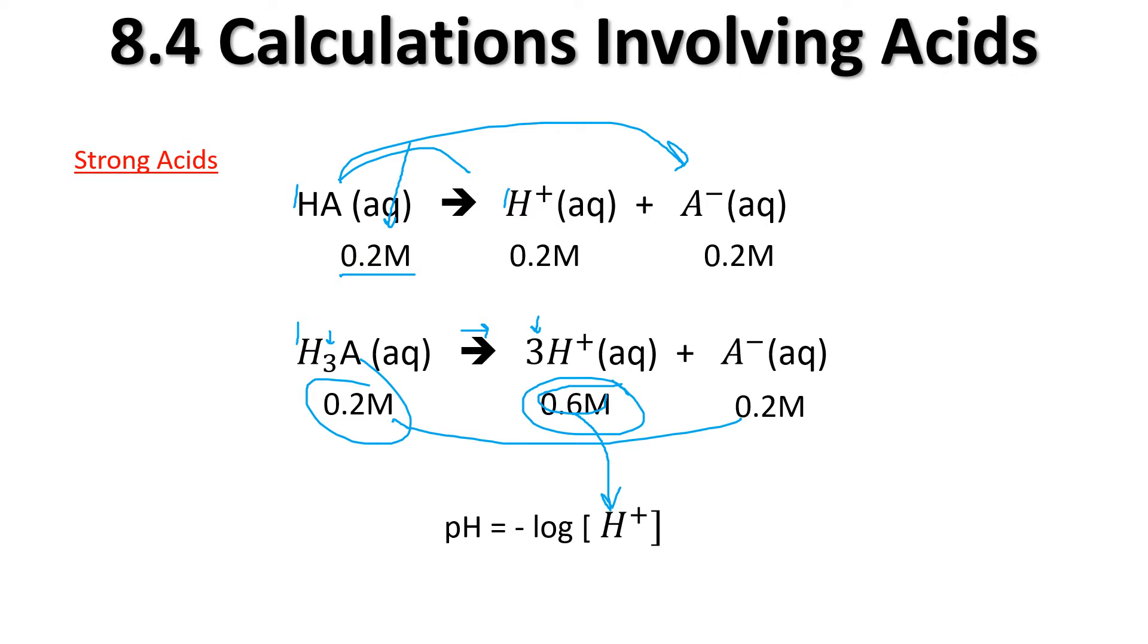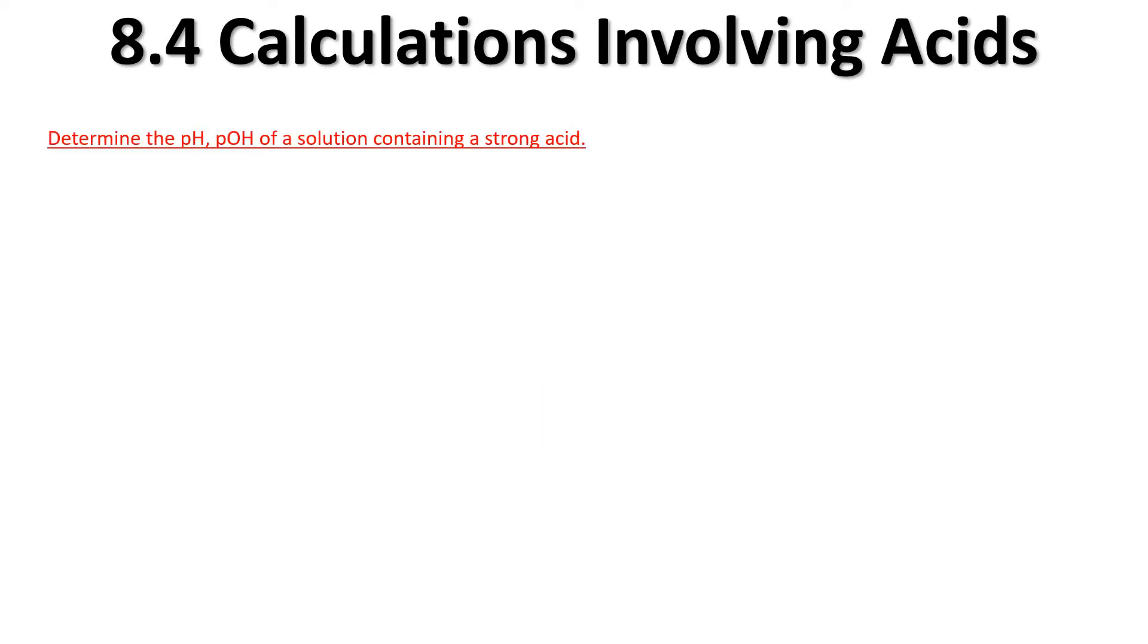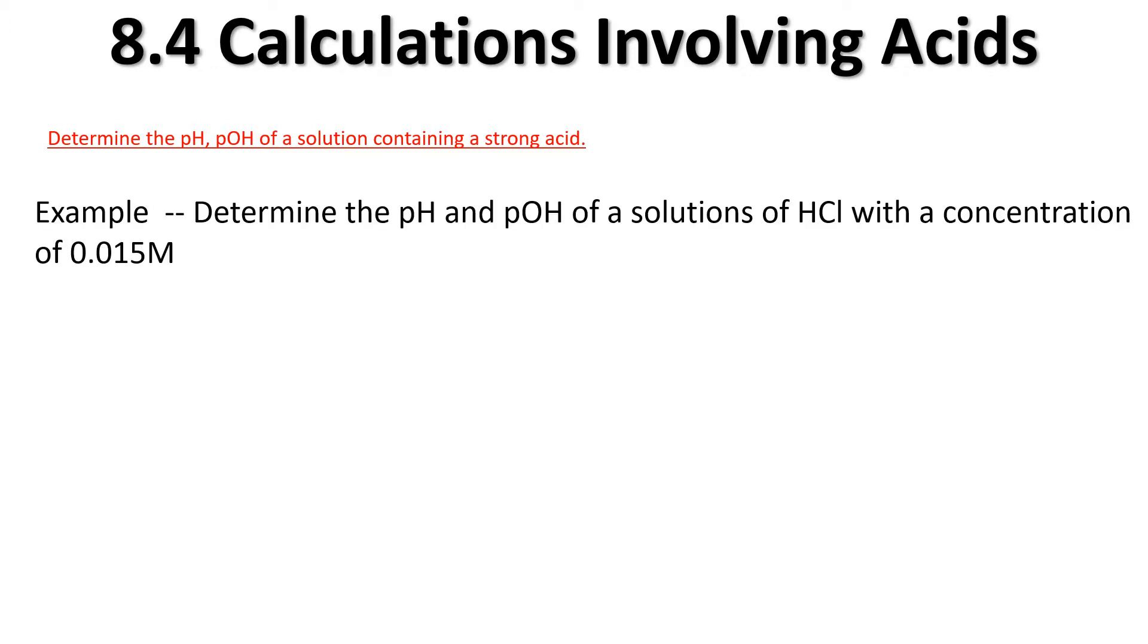Here's a question with strong acids. I want to determine the pH and the pOH of a solution containing a strong acid HCl. It's a strong acid and I give you the concentration here. There is your equation and there's our log formula. All we need to simply do is take the negative log of 0.015 and get your answer 1.82.